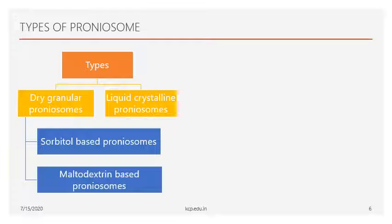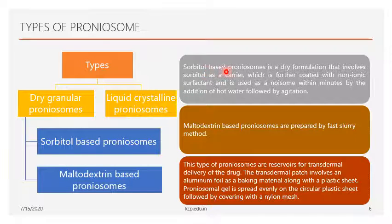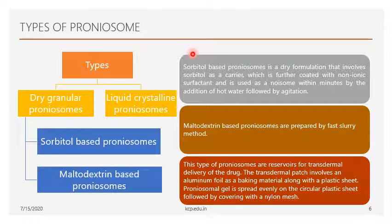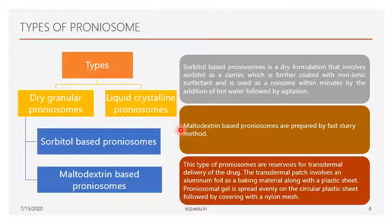Dry granular proniosomes are further classified into two types: sorbitol-based proniosomes and maltodextrin-based proniosomes. Sorbitol-based proniosomes are a dry formulation where the carrier is coated with non-ionic surfactants and converts to niosomes within minutes by addition of hot water followed by agitation. Maltodextrin-based proniosomes are prepared using a fast slurry method, which will be discussed in a later slide.